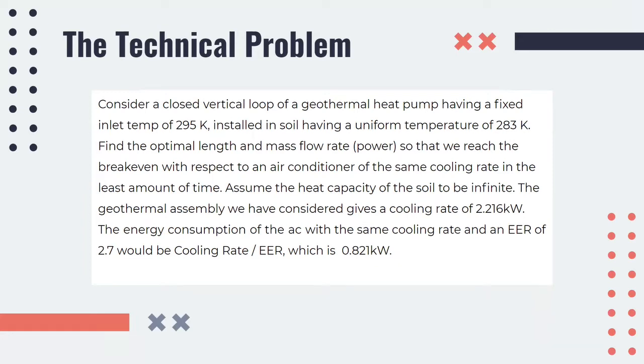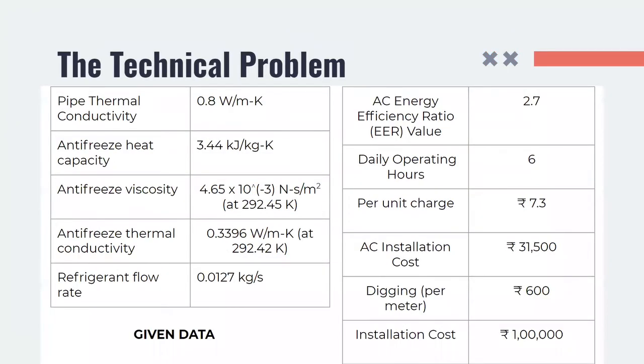The geothermal assembly we have considered gives a cooling rate of 2.216 kW. The energy consumption of the AC with the same cooling rate having an EER of 2.7 would be 0.821 kW. We use the following values in the calculation: the pipe thermal conductivity, the antifreeze heat capacity, the antifreeze viscosity, the antifreeze thermal conductivity, refrigerant flow rate, AC energy efficient ratio value, daily operating hours per unit charge, AC installation cost, digging cost per meter and the installation cost. Now, handing over to Devishree.